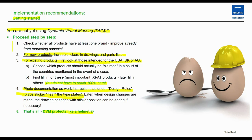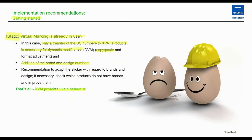You do not have to reach 100 percent immediately — fill in others later. Photo documentation acts as a work instruction. Under design rules, place the sticker near the type plates; when design changes are made, the drawing changes with sticker position can be added if necessary. That's all — and DVM protects like a helmet.